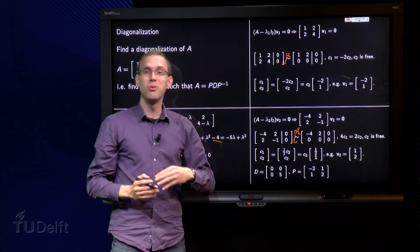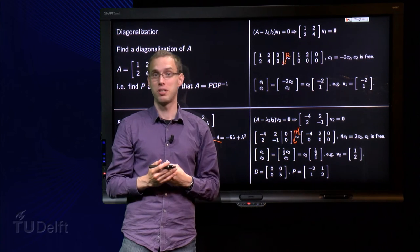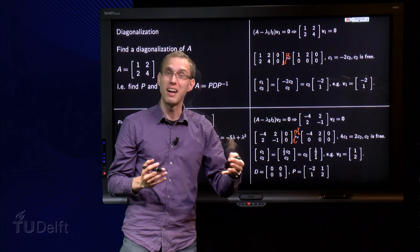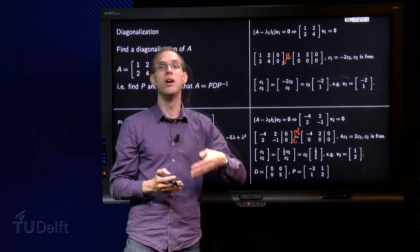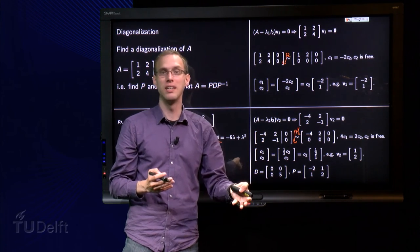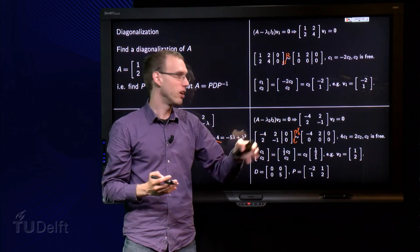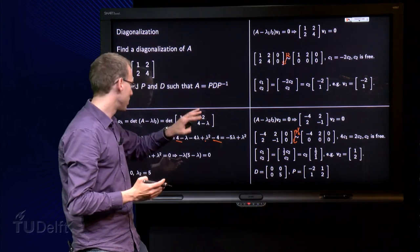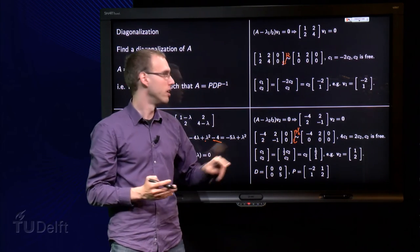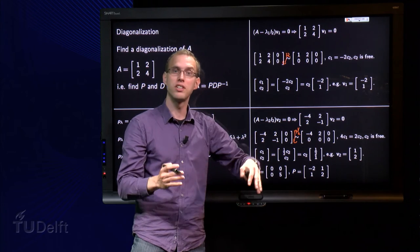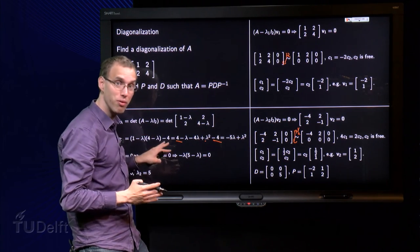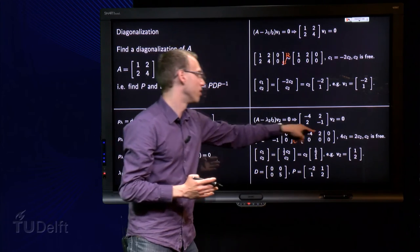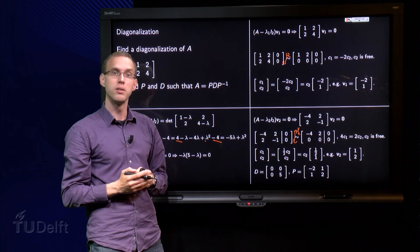Well, in this stage you should get free variables, because if you wouldn't get free variables, you would only find a trivial solution, which would lead to V equals zero. But V equals zero cannot be an eigenvector. So, if you have no free variables over here, you have no eigenvector, but that means that your eigenvalues are wrong. So, if you find here only the trivial solution, go back, you did something wrong before. This is just a nice check on your earlier computations. But, we find free variables, so it's fine.